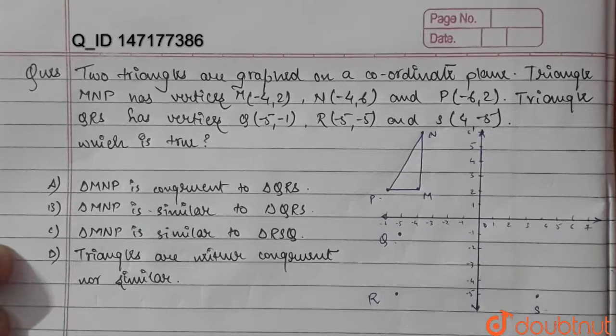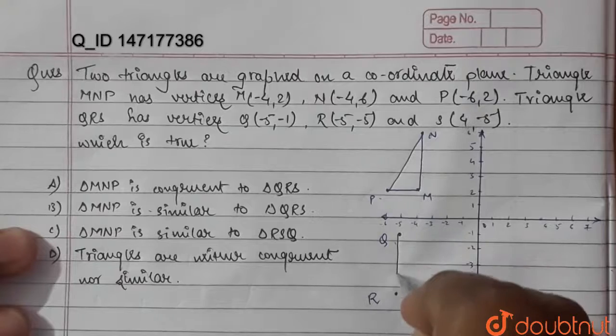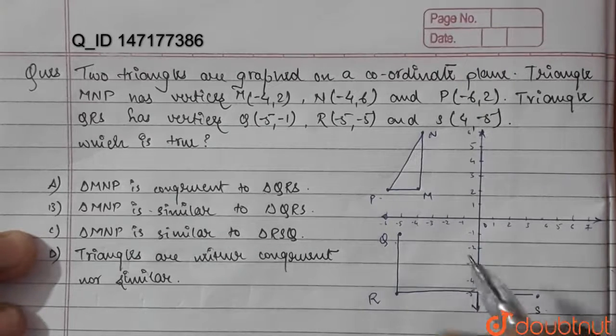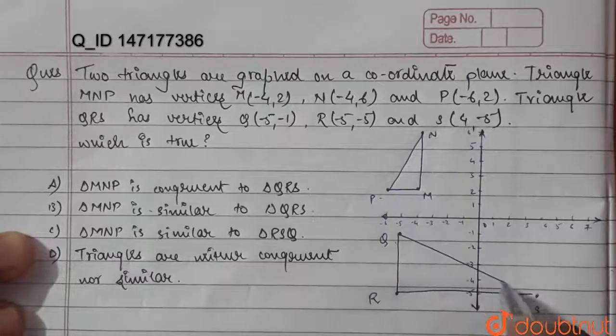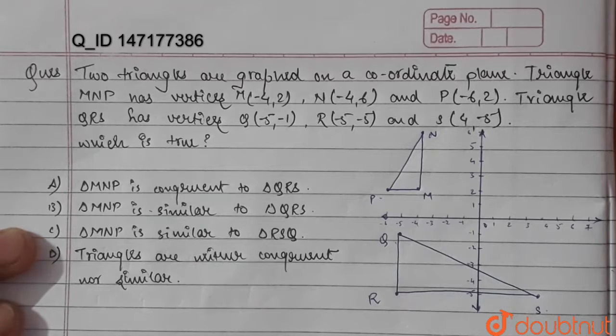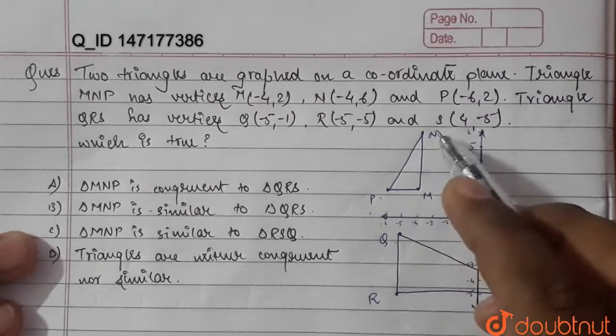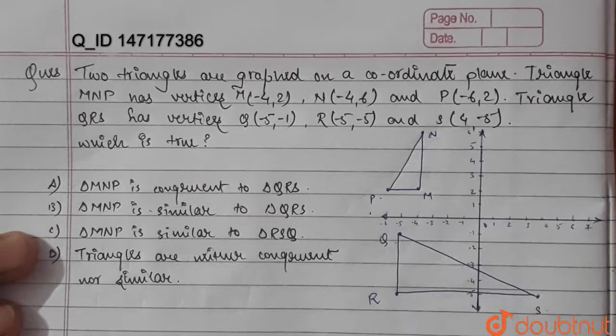So we get our two triangles as M, P, N and Q, R, S.